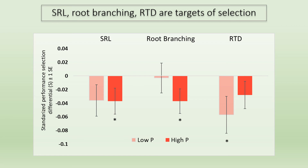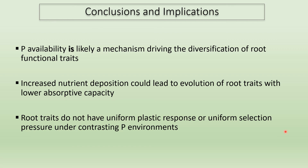So what are the implications of these findings? Our results showed that SRL, RTD, and root branching are targets of performance selection under certain phosphorus environments, meaning the expression of these traits is linked with plant performance. This suggests that phosphorus availability is likely a mechanism driving the diversification of root functional traits. The direction of root trait selection is largely in line with my predictions, giving us useful tools to predict long-term evolution of plant root systems based on changing environmental conditions. For instance, increased agricultural fertilization is known to cause nutrient deposition and enrichment of surrounding terrestrial ecosystems with higher phosphorus levels, which could lead to the evolution of root systems exhibiting lower absorptive capacity in these areas.